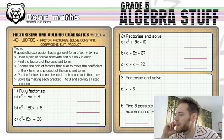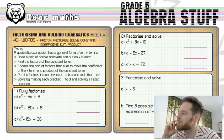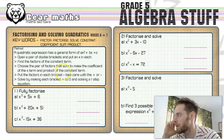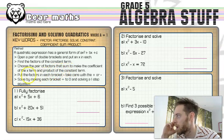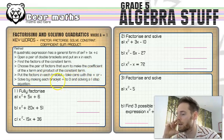Now the method is fairly systematic. Pretty simple to follow. Open a pair of double brackets and put an x in each. Find the factors of the constant term. Choose the pair of factors that sum to make the coefficient of the x term and the product of the constant term. Now put the factors in each bracket. Take care with the plus or the minus.